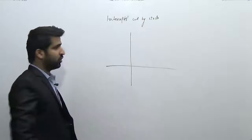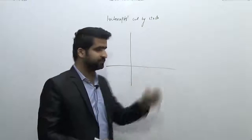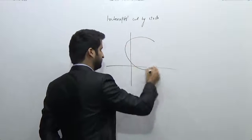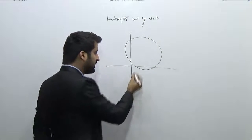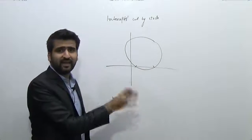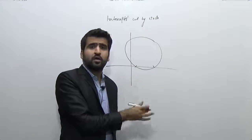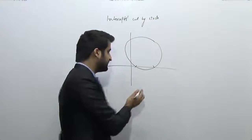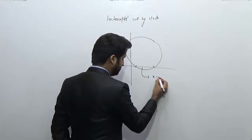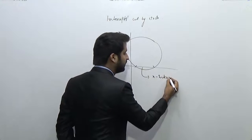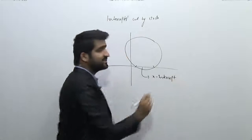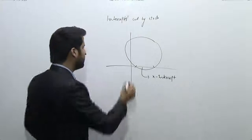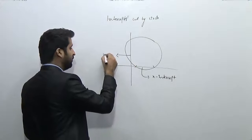These are two coordinate axes: x-axis and y-axis. Now let's assume that the circle goes something like this. It is cutting some portion on the x-axis as well as some portion on the y-axis. The portion on the x-axis is known as the x-intercept. The portion cut by a circle on the x-axis is called the x-intercept.